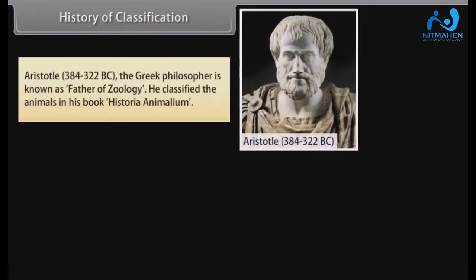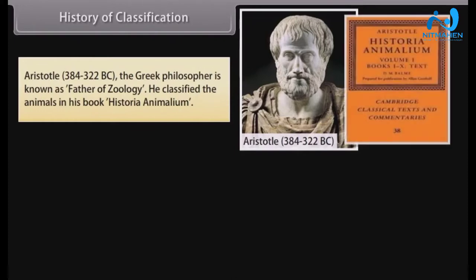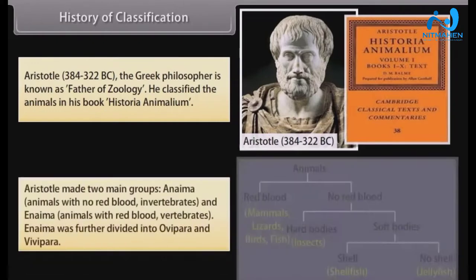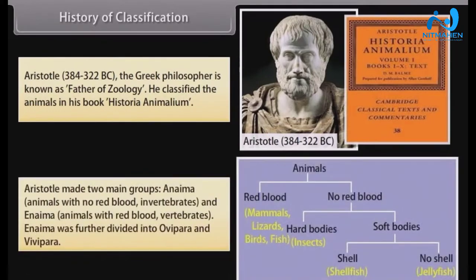Aristotle (384–322 BC), the Greek philosopher, is known as the father of zoology. He classified animals in his book Historia Animalium. Aristotle made two main groups: Anaima, animals with no red blood (invertebrates), and Enaima, animals with red blood (vertebrates). Enaima was further divided into ovipara and vivipara.